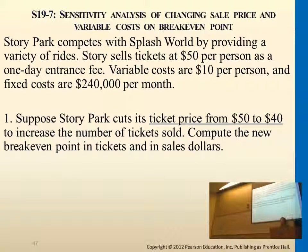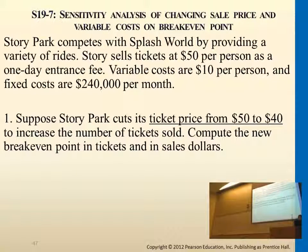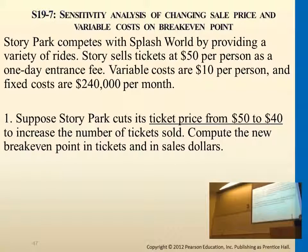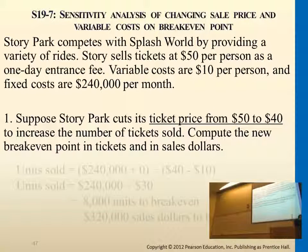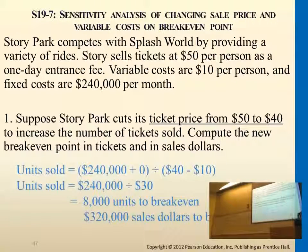You did this part right. If it's asking for the break-even point in units, then this will be the answer, but then you have one more step to do. Once you get this 8,000 tickets, you multiply that by 40 — because the new sales price per ticket is 40 — so you have $320,000. This would be the break-even sales in dollars.